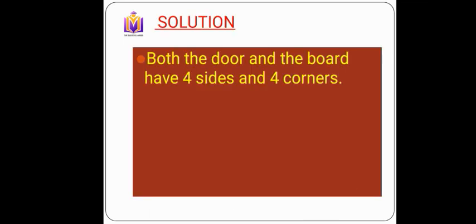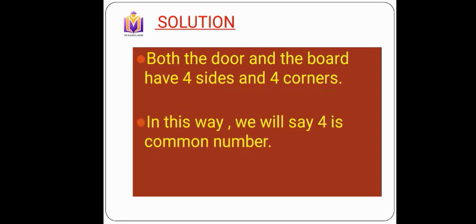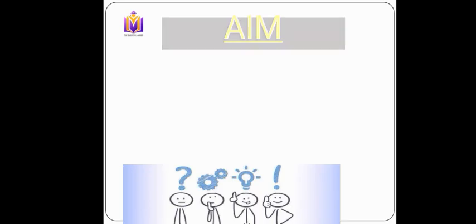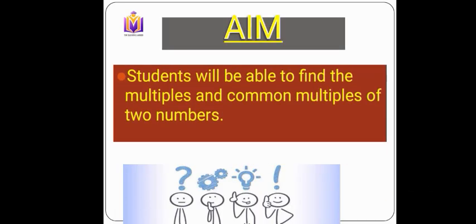Both the door and the board have four sides and four corners, so four is the common number in both the pictures. Today we'll see how we can find multiples and common multiples for given numbers. The aim of today's class is that students will be able to find the multiples and common multiples for two given numbers.